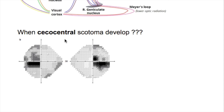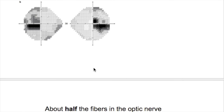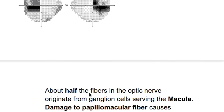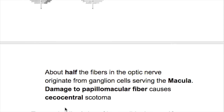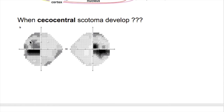When secocentral scotomas develop — this is the secocentral scotoma — about half the fibers in the optic nerve originate from the ganglion cells serving the macula. Damage to the papillomacular fiber bundle causes secocentral scotomas.